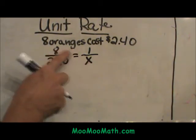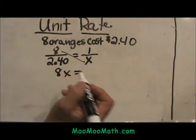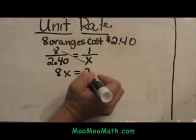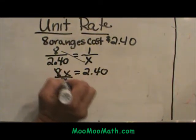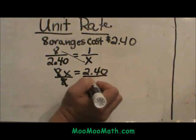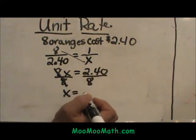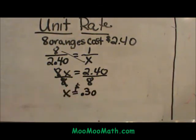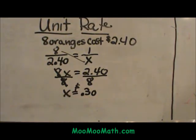8 times x is 8x. This cross product is very simple. 2.40 times 1 is just 2.40. Then we divide by the coefficient, because you always want x by itself. So x is equal to 2.40 divided by 8, or 0.30, which is $0.30. So the unit cost is $0.30 per orange.